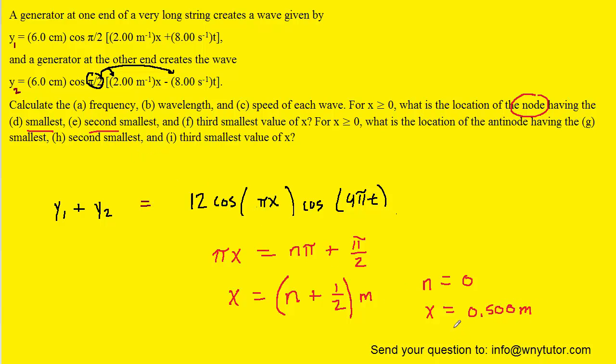The second smallest would be when n is equal to 1. And when we plug that into the formula, we could see then that x would become 1.5 meters. And finally, the third smallest would be when n is equal to 2. And then, of course, x would turn out to be 2.5 meters.